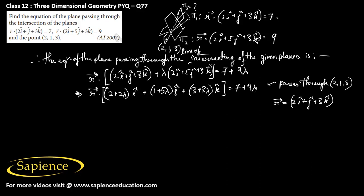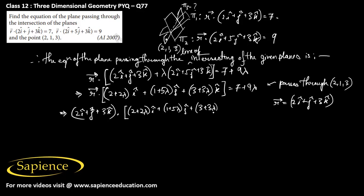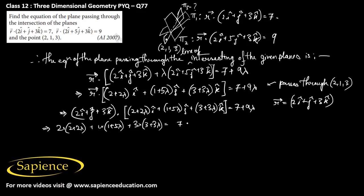Substituting, we get (2î + ĵ + 3k̂) · [(2 + 2λ)î + (1 + 5λ)ĵ + (3 + 3λ)k̂] = 7 + 9λ. This gives 2(2 + 2λ) + 1(1 + 5λ) + 3(3 + 3λ) = 7 + 9λ.